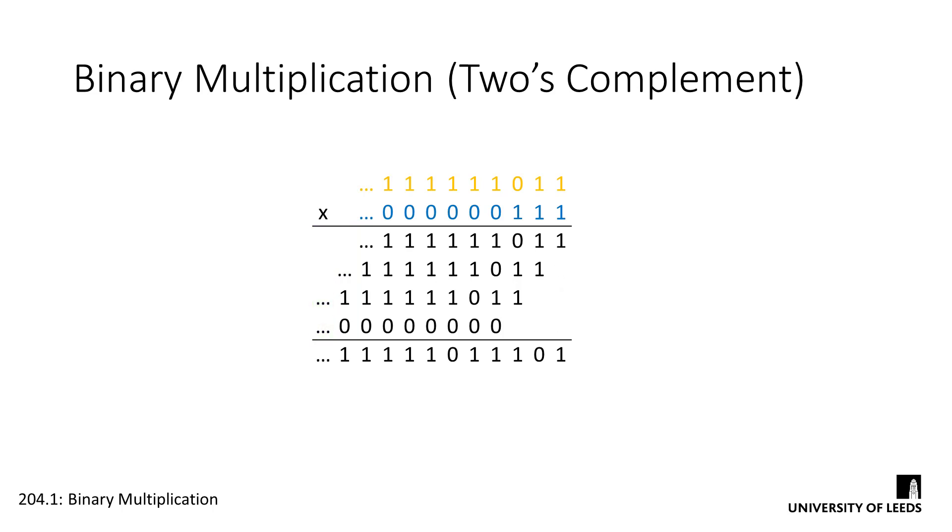Our additions result is infinitely long, so when do we know when to stop? Well, we know from the unsigned multiplication that the maximum length of our output is equal to n plus m. So we take that number of bits as our result. Everything on the left of this can be discarded.